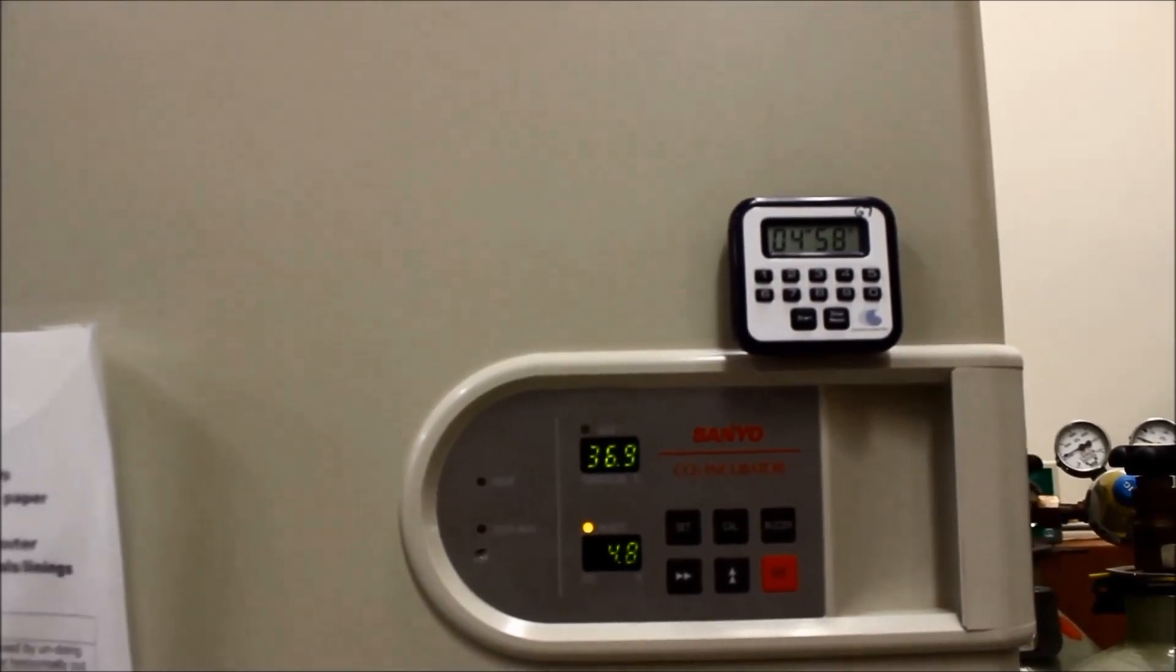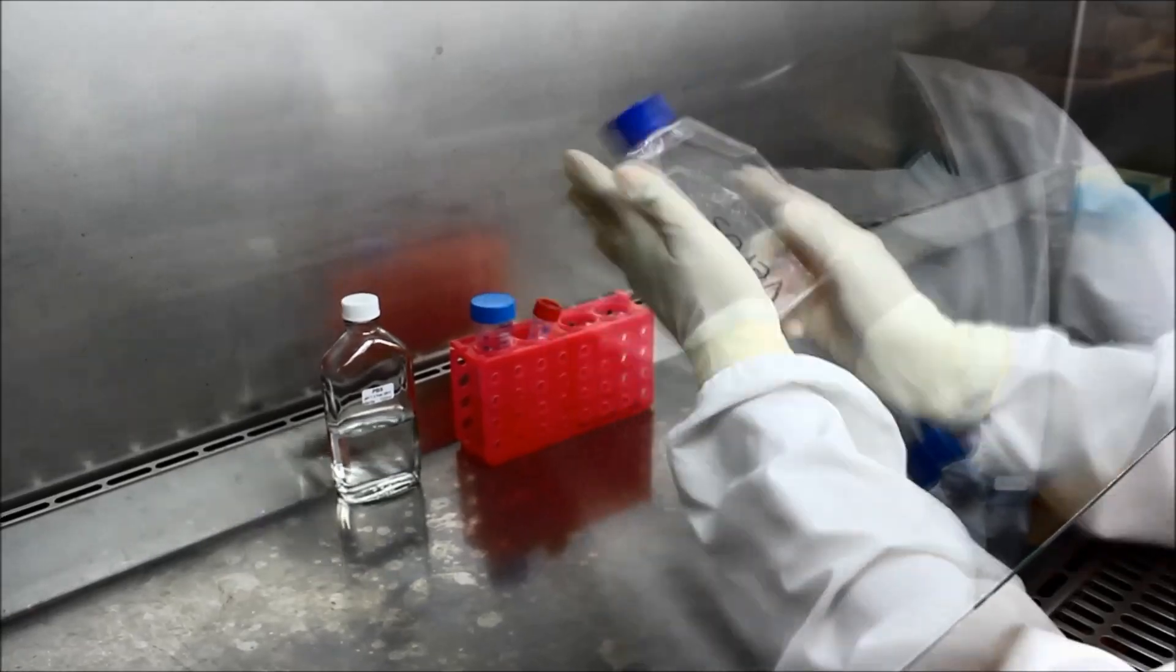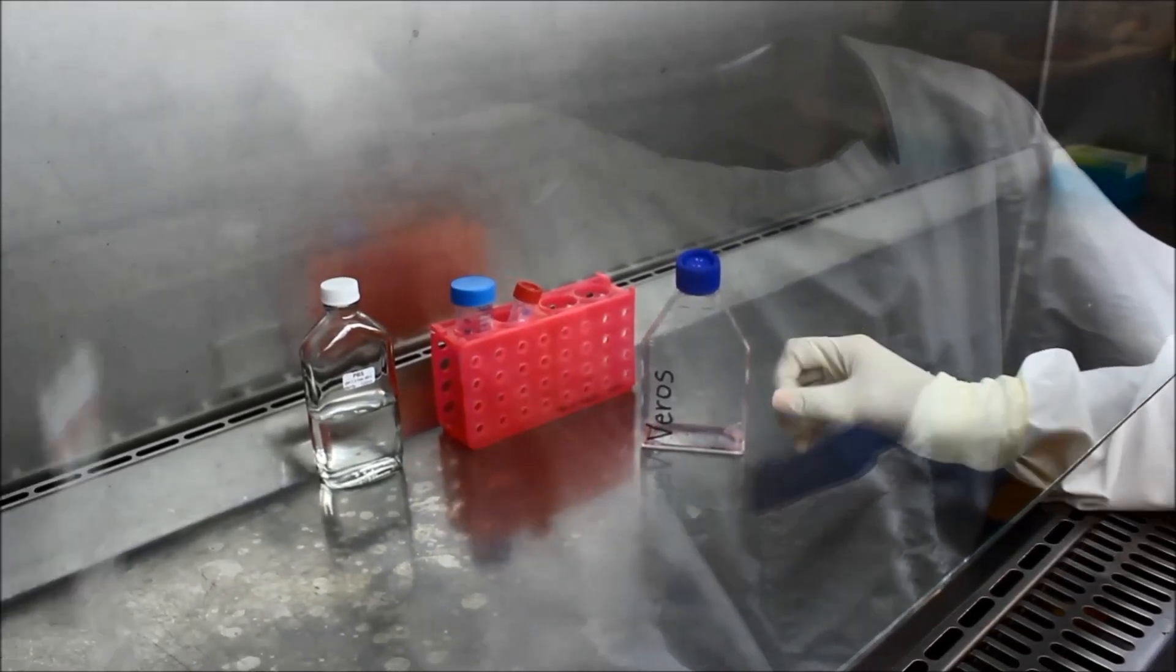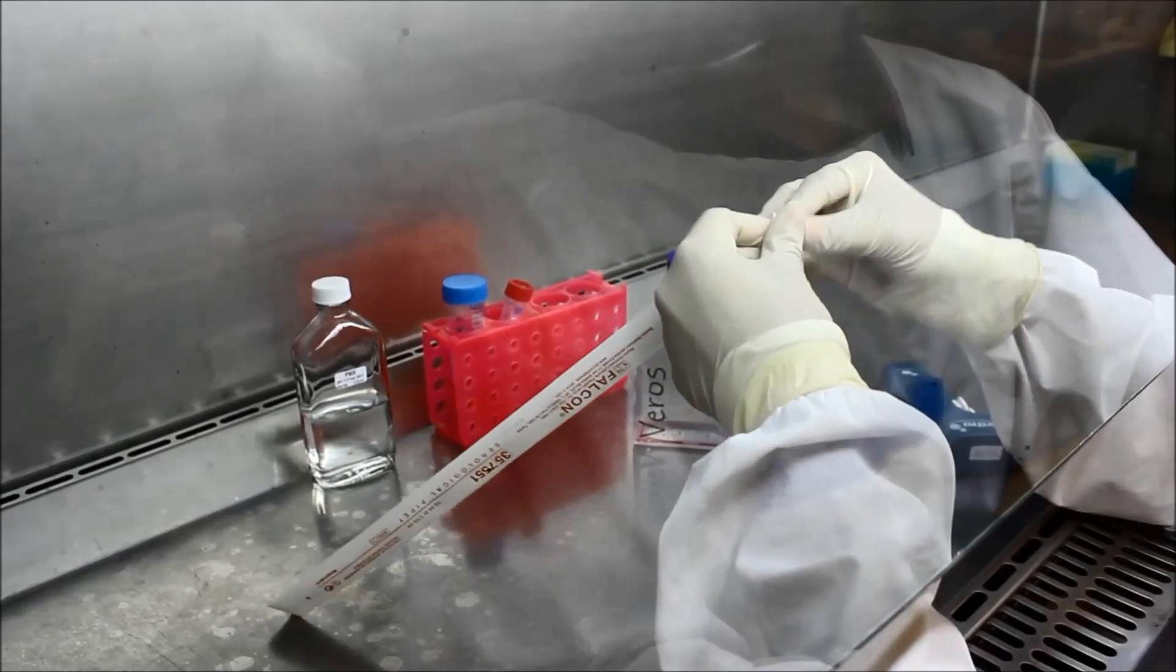Dislodge the cells from the base of the flask by holding the flask with one hand and tapping firmly with the other. If you hold the flask up to the light, you should be able to see a milky appearance with the detached cells streaming down. These are ready for resuspension.